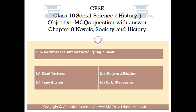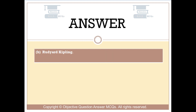Question number 7. Who wrote the famous novel Jungle Book? Option A: Hunt Jackson. Option B: Rudyard Kipling. Option C: Jane Austen. Option D: R.L. Stevenson. The right answer is Option B — Rudyard Kipling.